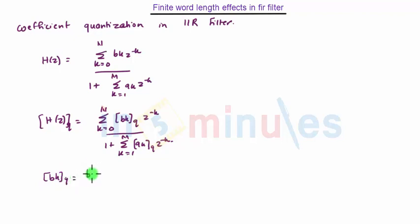BKq is given by BK plus delta BK, and AKq is equal to AK plus delta K. Both these terms are changes in the coefficients of BK and AK, and q denotes a quantized coefficient.